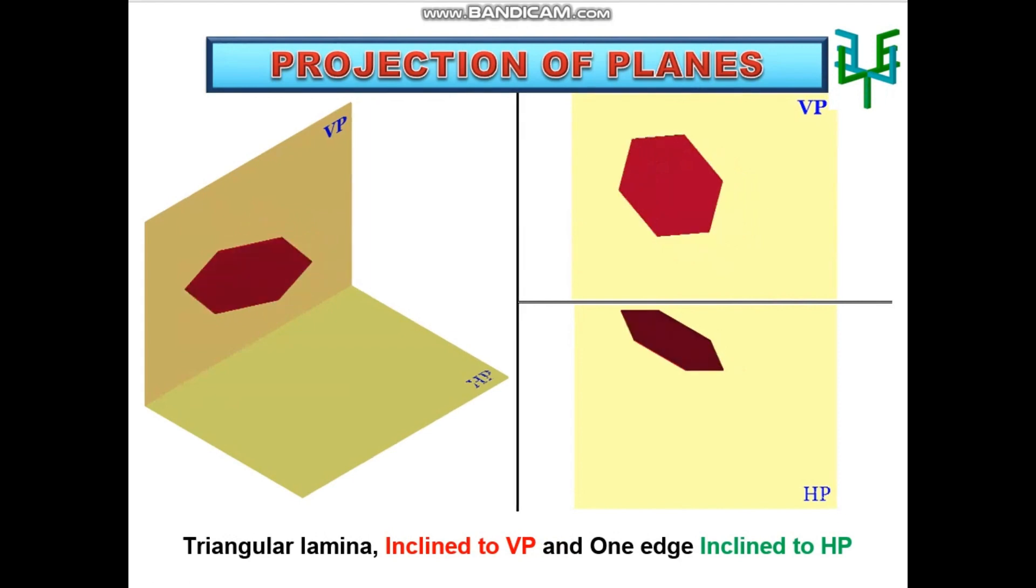Projection of this case can be drawn in three stages. The lamina is inclined to VP and one edge of it is inclined to HP. Inclination of the lamina should be made parallel and inclination of the edge should be made perpendicular.